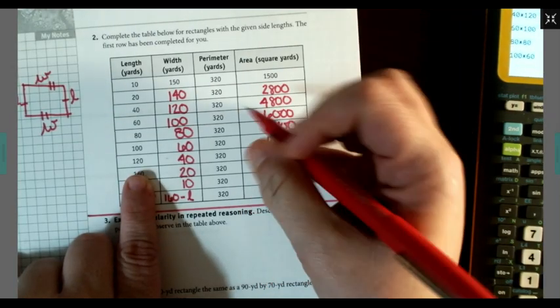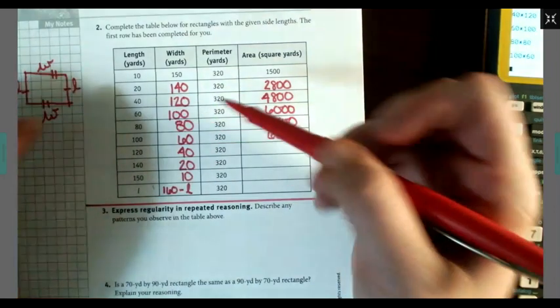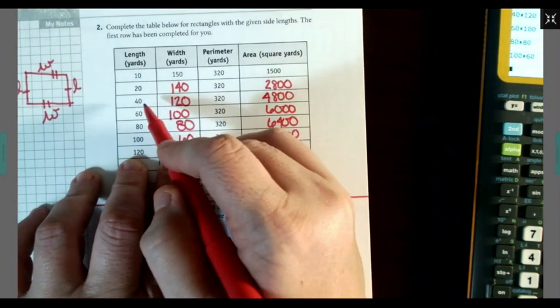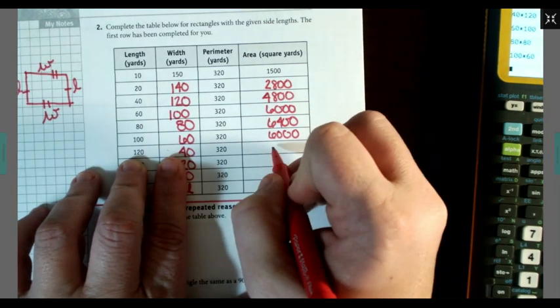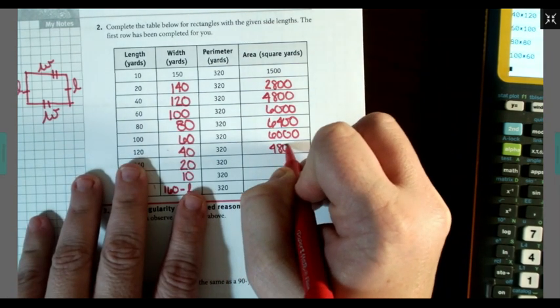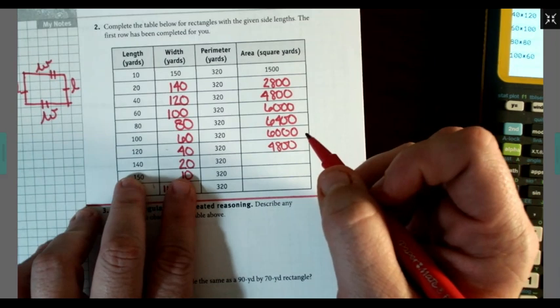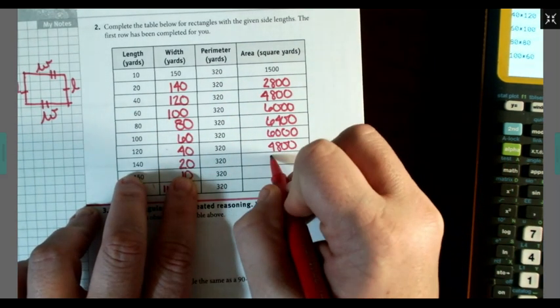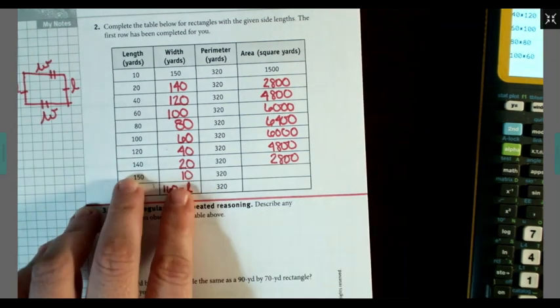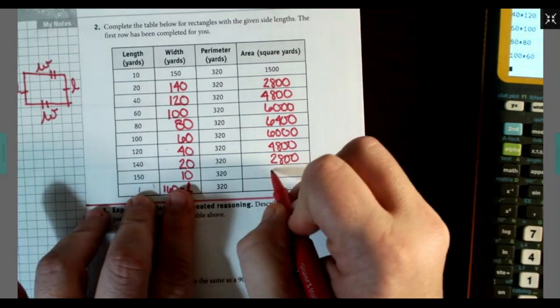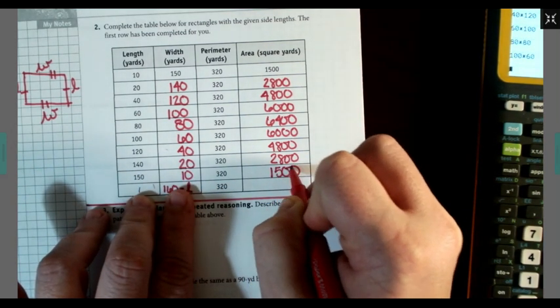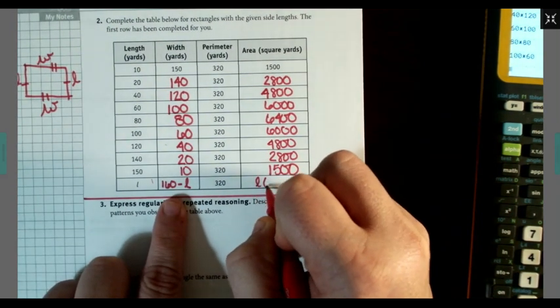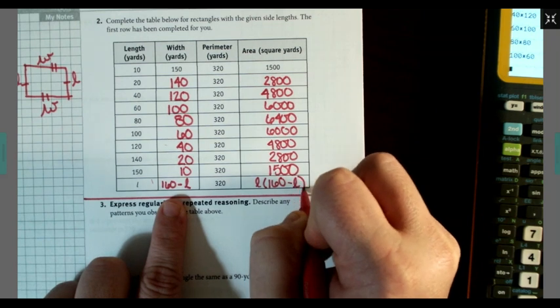If you look, these numbers are repeating but they're opposite. Like my length has now become my width. So 120 times 40 is the same thing as saying 40 times 120, 4,800. Here we have 140 and 20, which is 20 and 140, 2,800. 150 and 10 was 1,500. And this is going to be L times 160 minus L.